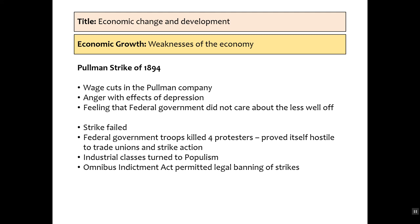Industrial classes turned towards populism and later progressivism. This is one of the reasons for the growth of the Populist Party and how they were able to secure the Democratic presidential nomination. It also led to the Omnibus Indictment Act, which permitted the legal banning of strikes. So, as a result of the deaths, protests, and struggles caused by the 1894 Pullman strike, the government passed a law that allowed companies to ban strikes.